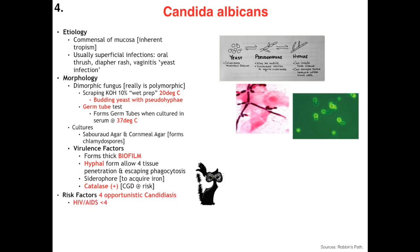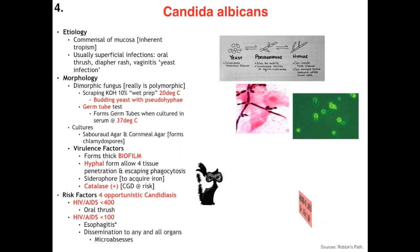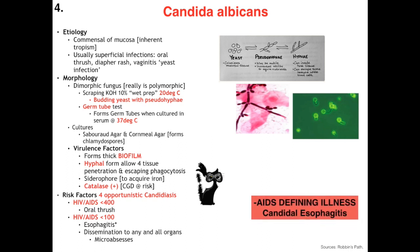For risk factors for Candida to become opportunistic: first, HIV/AIDS with a CD4 T-cell count below 400 for oral thrush. Second, in HIV/AIDS patients with CD4 T-cell counts below 100 they are at risk for Candida esophagitis, which is our second AIDS-defining illness on the list. Lastly, she can disseminate to any and all organs, forming micro-abscesses.